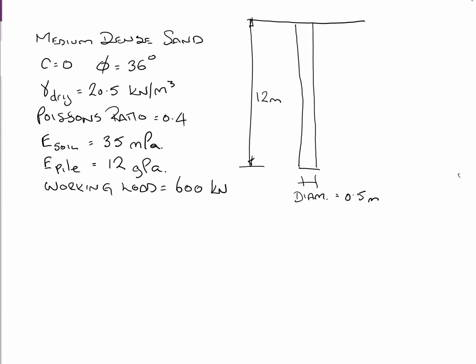We're doing this to AS2159, the Australian Piling Code. The code says in cohesionless material, for a single pile, there's a limiting stress on the pile as we go with depth. It starts at 0 at the surface, comes down to a certain depth at a constant limited stress, and that depth where that occurs is termed ZL below the surface.